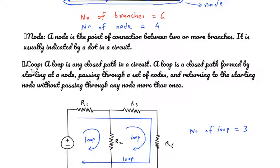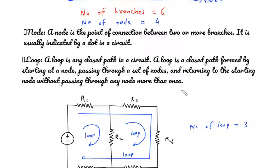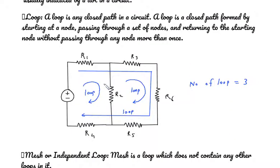What is loop? A loop is any closed path in a circuit. A loop is a closed path formed by starting at a node, passing through a set of nodes, and returning to the starting node without passing through any node more than once. This is a loop. This is also a loop and this is also a loop. So there are total three number of loops.